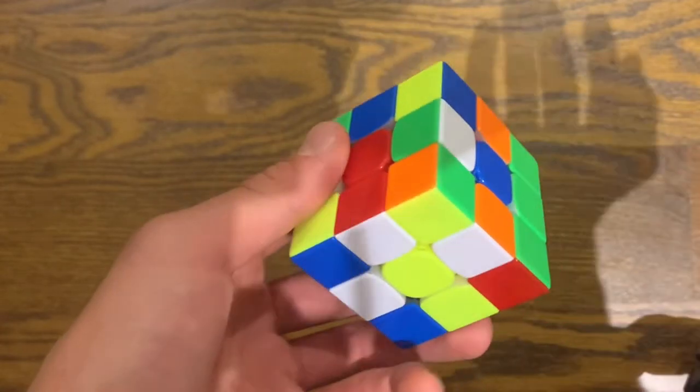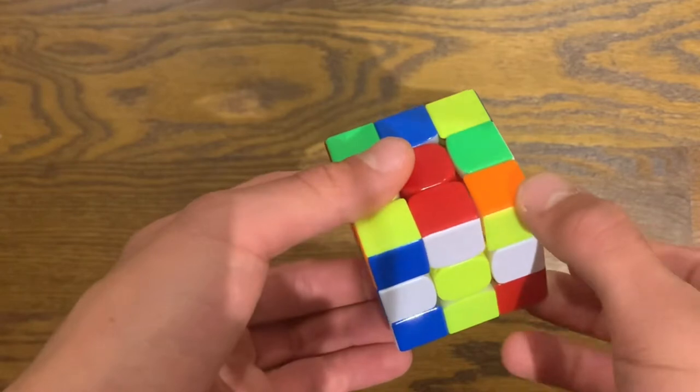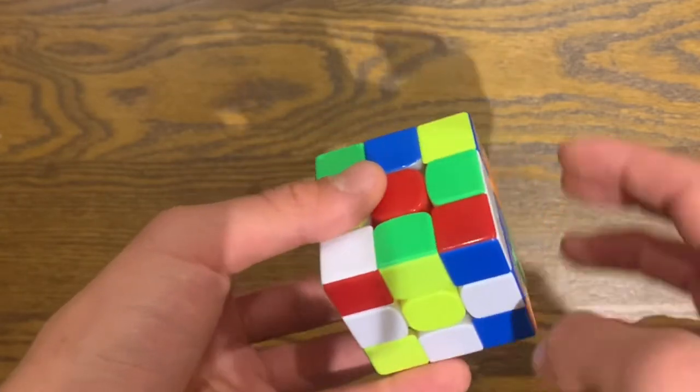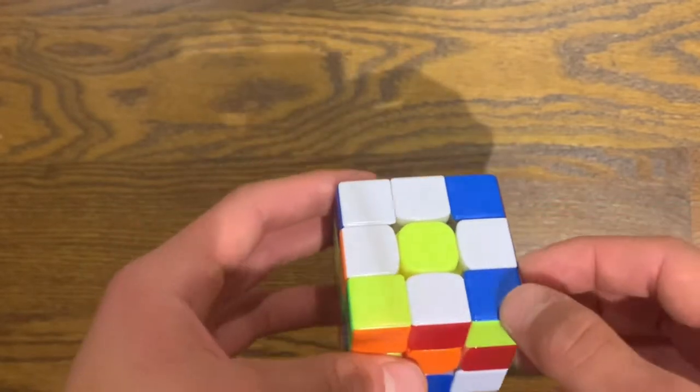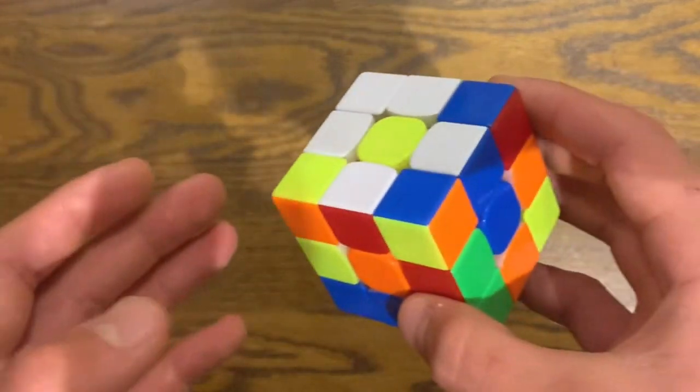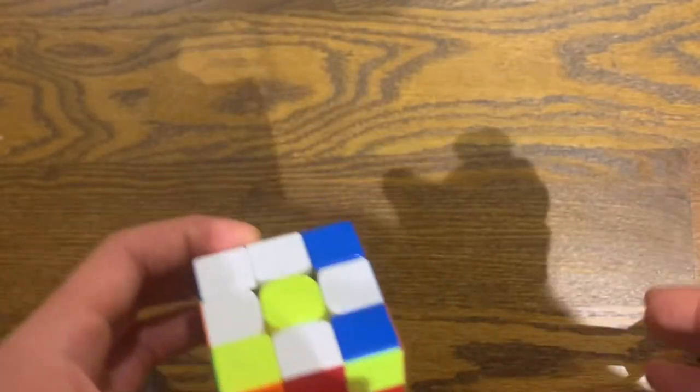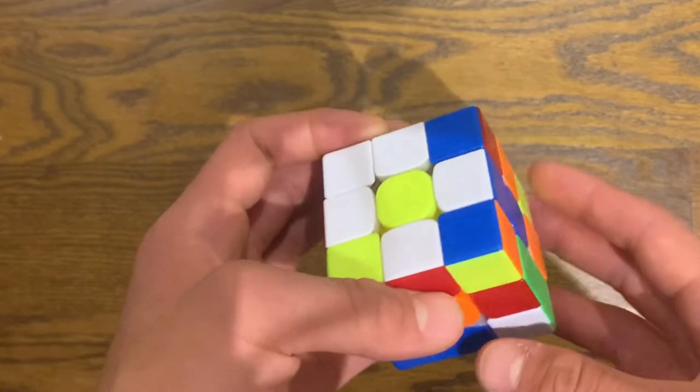Now this one, again, all I have to do, I don't want to mess up any of these ones, so I just have to move them over and then put this one down. And that is our daisy. Now, this is the first step to solving your cross, which is the major, major part of solving a 3x3 Rubik's Cube, and all advanced cubers must know.